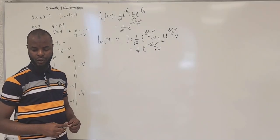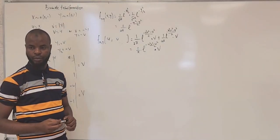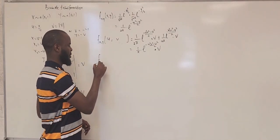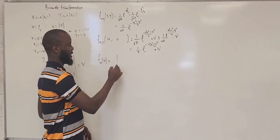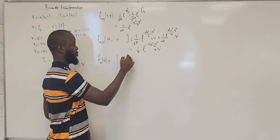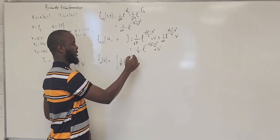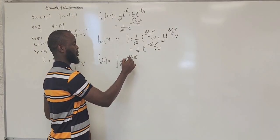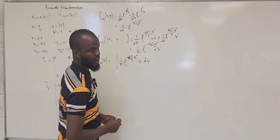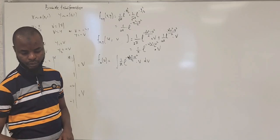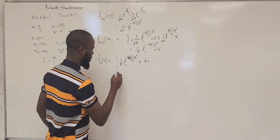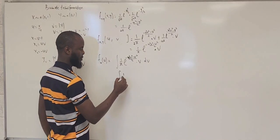What about the marginal distribution? The marginal distribution with respect to u is going to be the integral of one over pi, exponential minus u squared v squared minus v squared over two, times v dv. We can break this down: the exponent is v squared times u squared plus one.